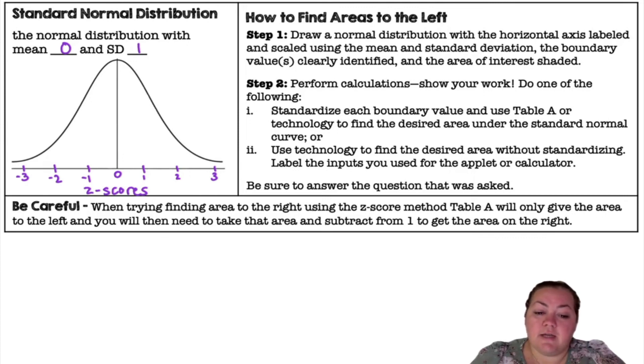When trying to find the area to the right using the z-score method or table A, well table A only gives you the area to the left. So you will need to take the area and subtract it from 1 to get the area on the right side.